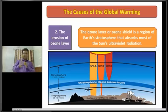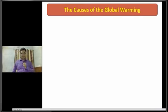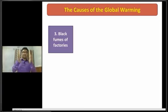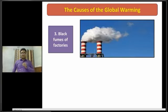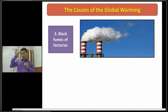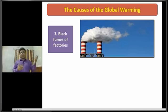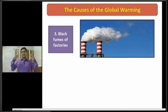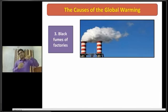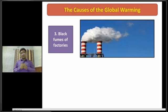Dear students, now I am going to discuss about the next cause of global warming, that is black fumes from factories. Due to the increase of factories in different countries of the world, a huge amount of black fumes is being mixed with our atmosphere, so the rate of carbon dioxide gas is being increased day by day. Black fumes from factories is one of the causes of global warming.